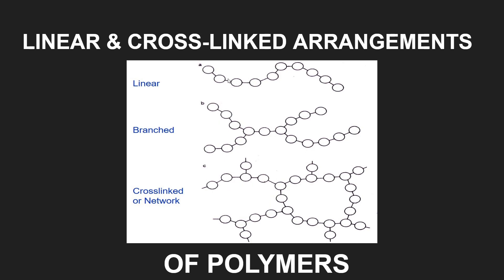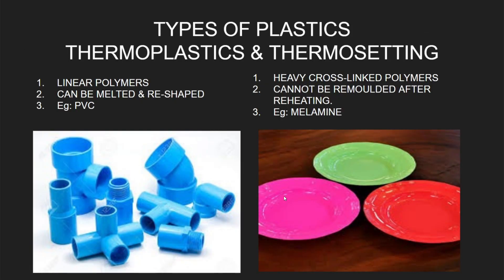You can see the linear — it's just like a chain. Branched means multiple sections have been crossed, and cross-linked means different linear arrangements have been joined with each other through the network. These are the linear or cross-linked arrangements of polymers.